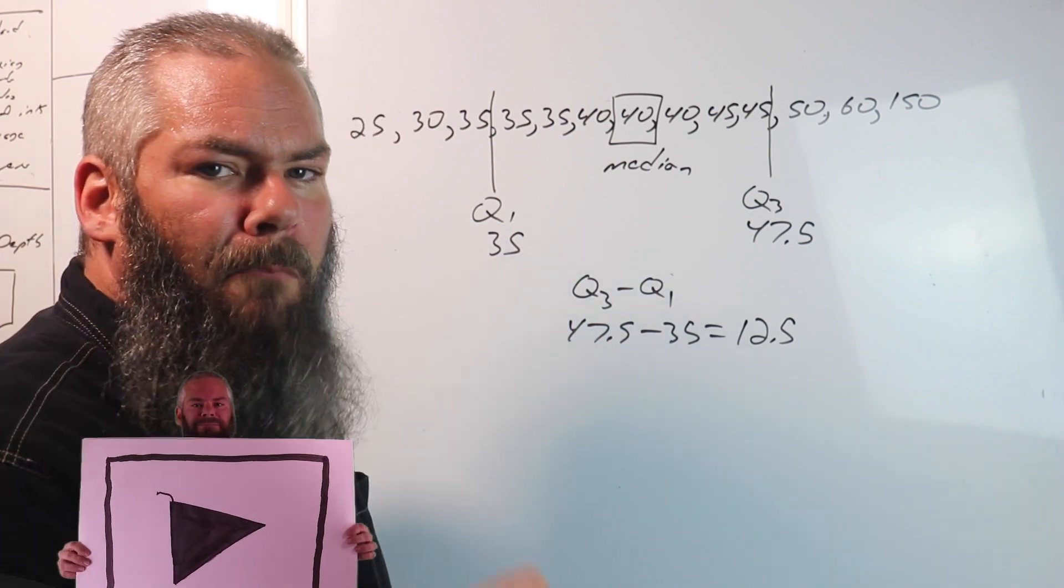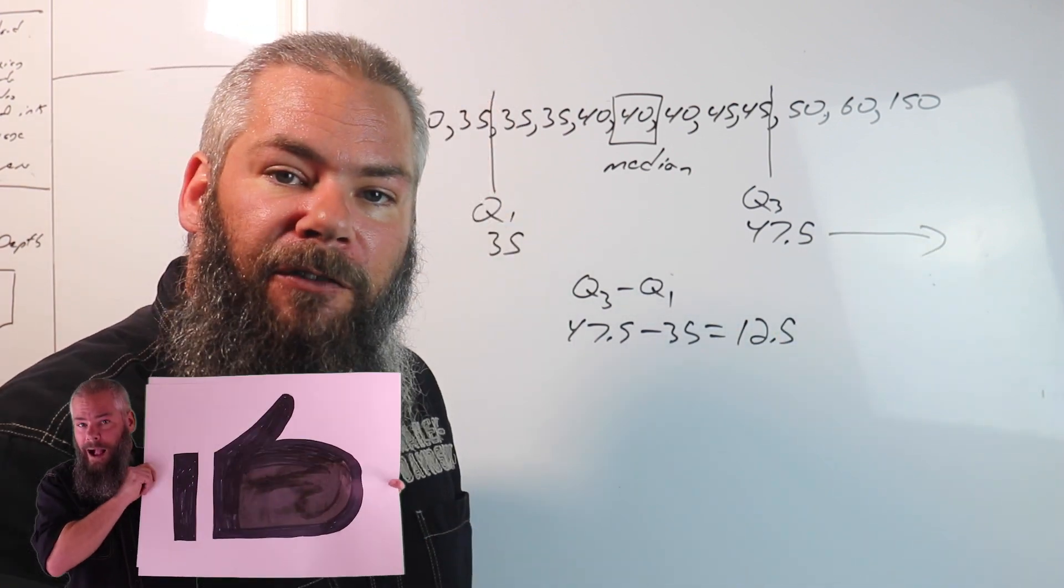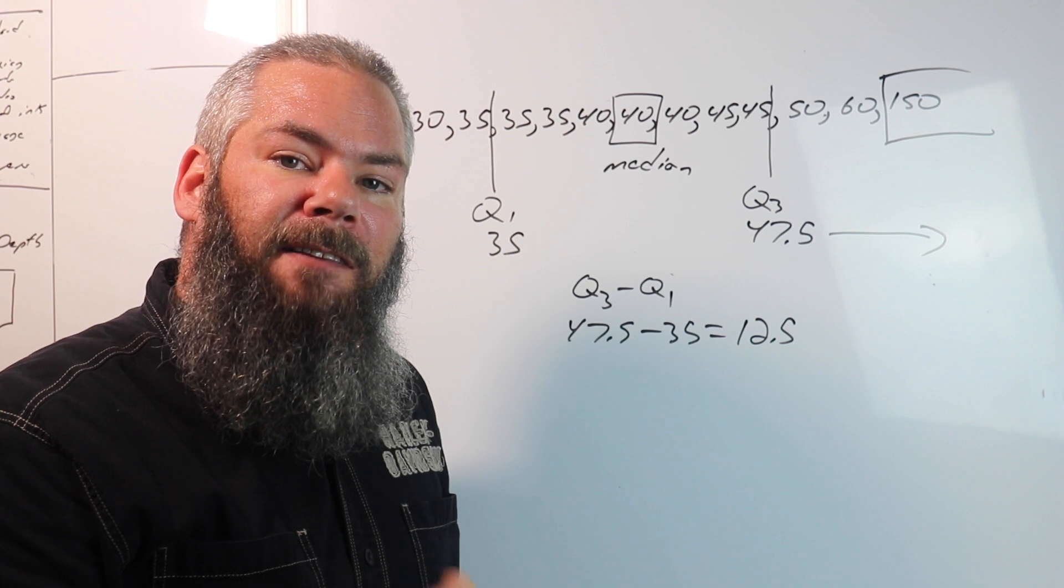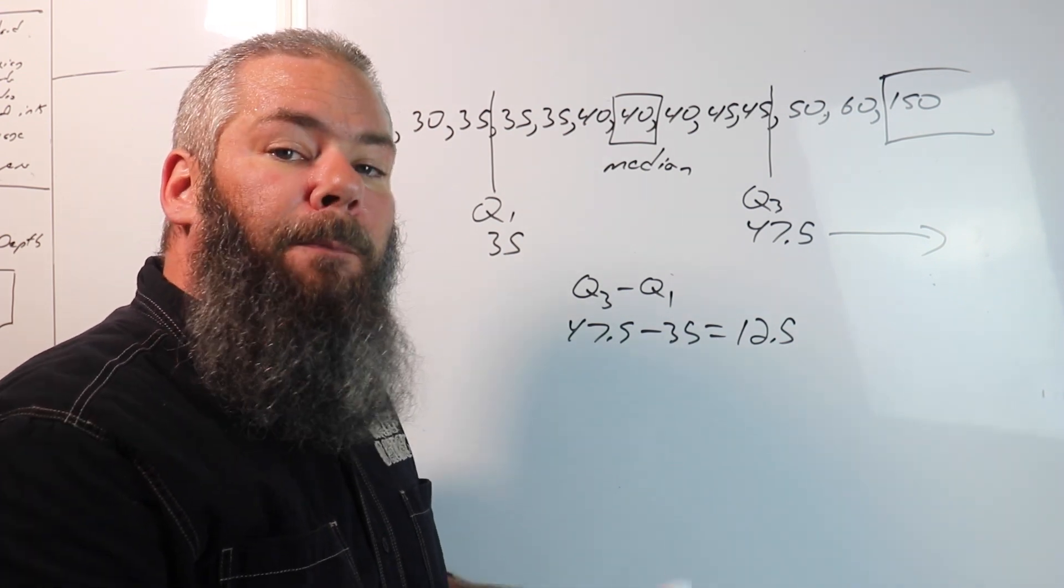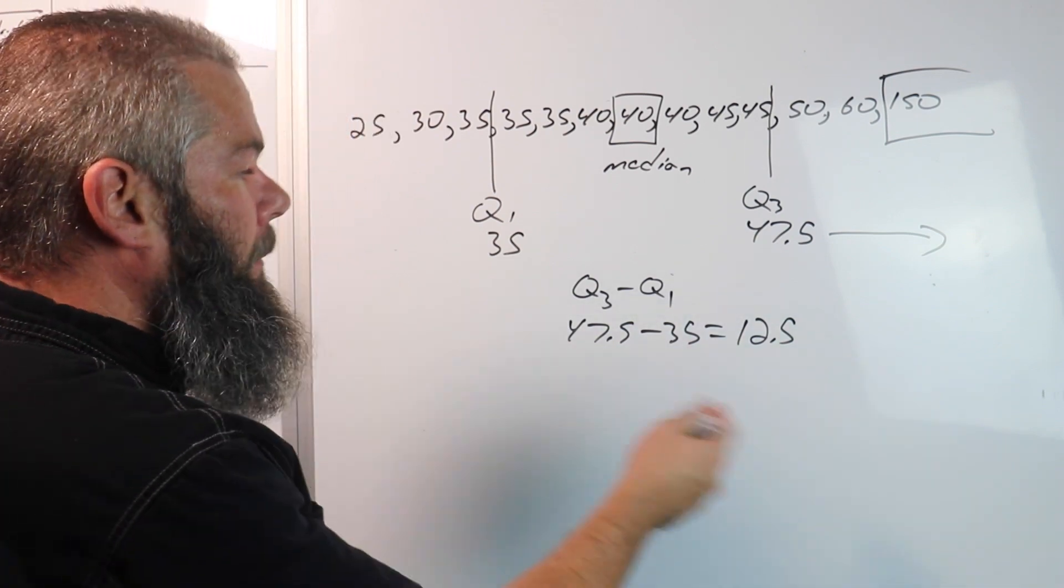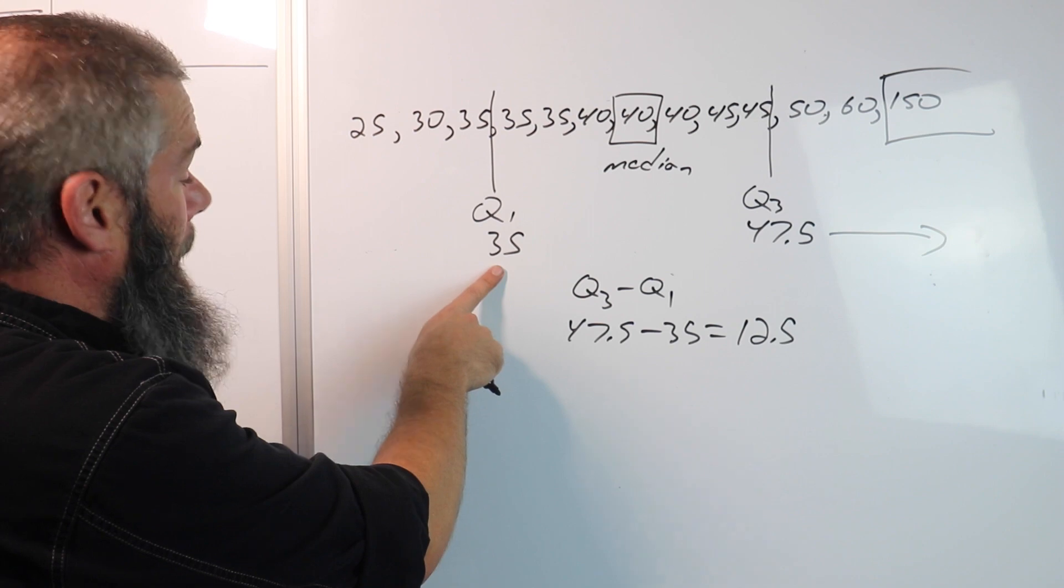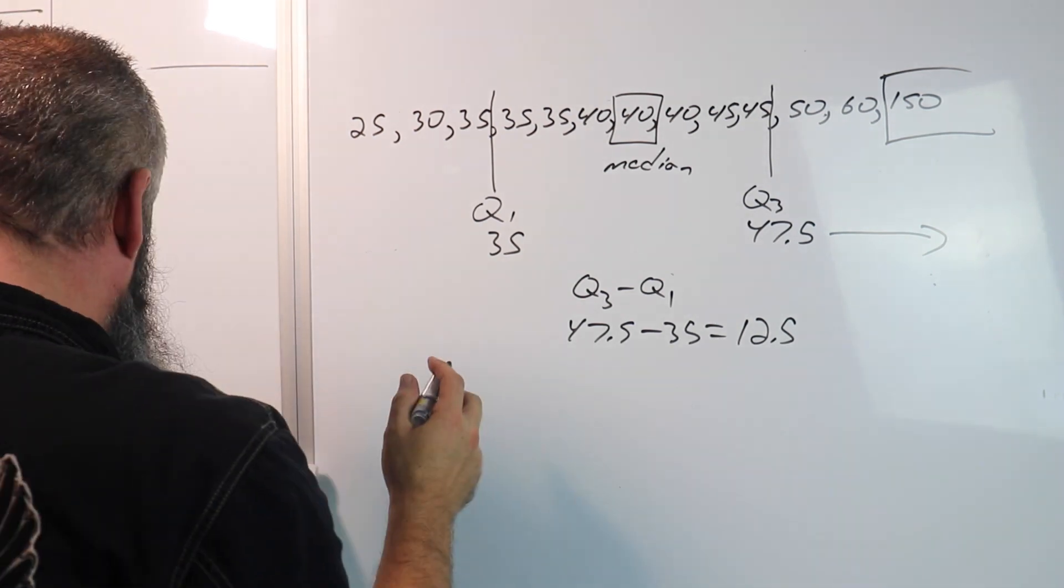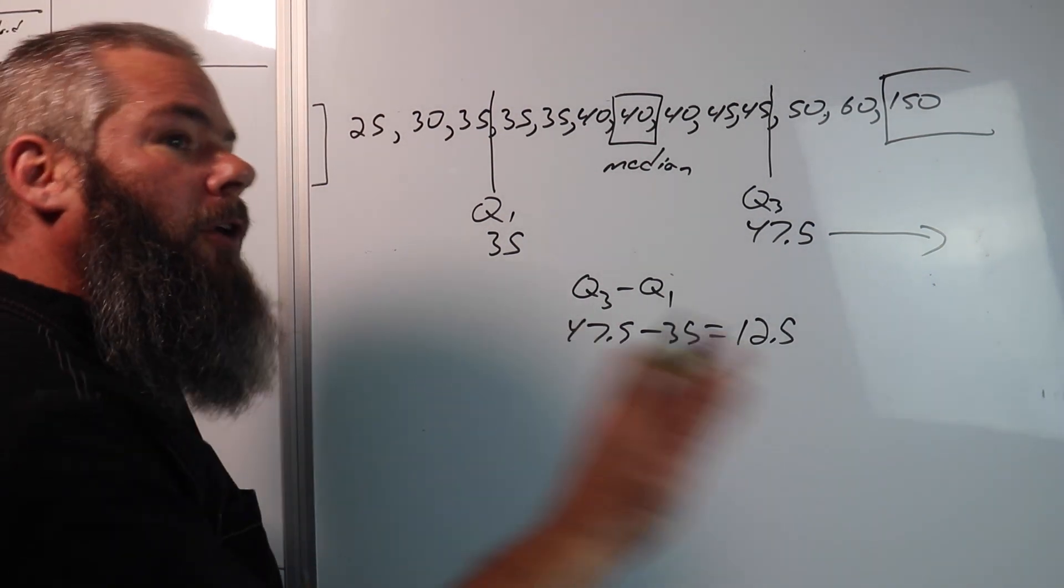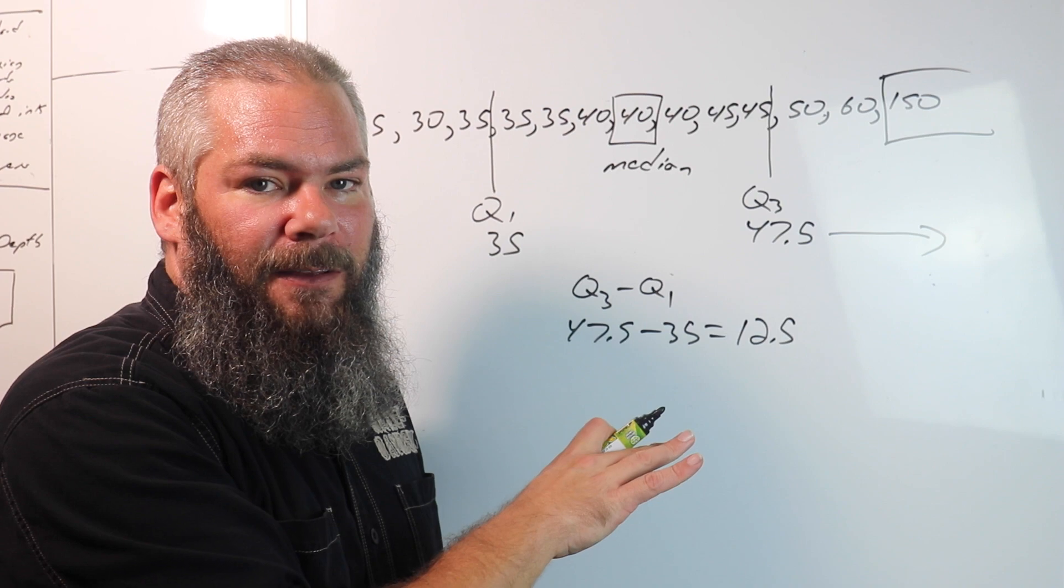An outlier is anything more than 12.5 away this way from 47.5. So, past 60, that becomes an outlier. And it's a data point that I can remove from my set before I was to go put it into the standard deviation. Similarly, a number can be too small. If I subtract 12.5 from 35, I wind up with 22.5. Anything smaller than 22.5 or larger than 60 is an invalid number based on this data set. So, I would exclude it.